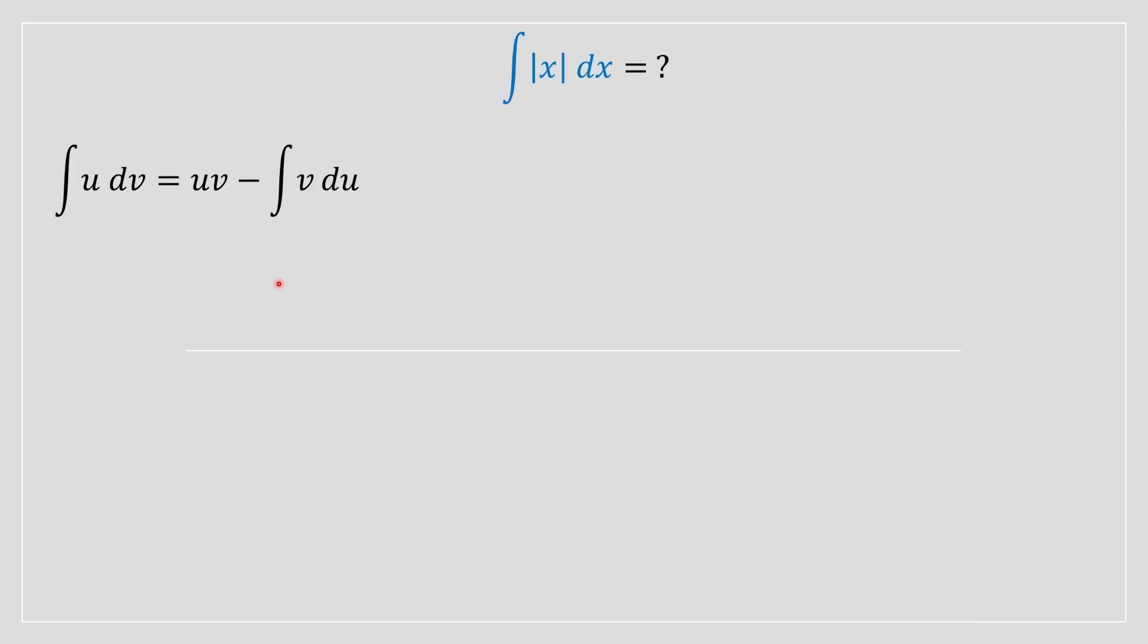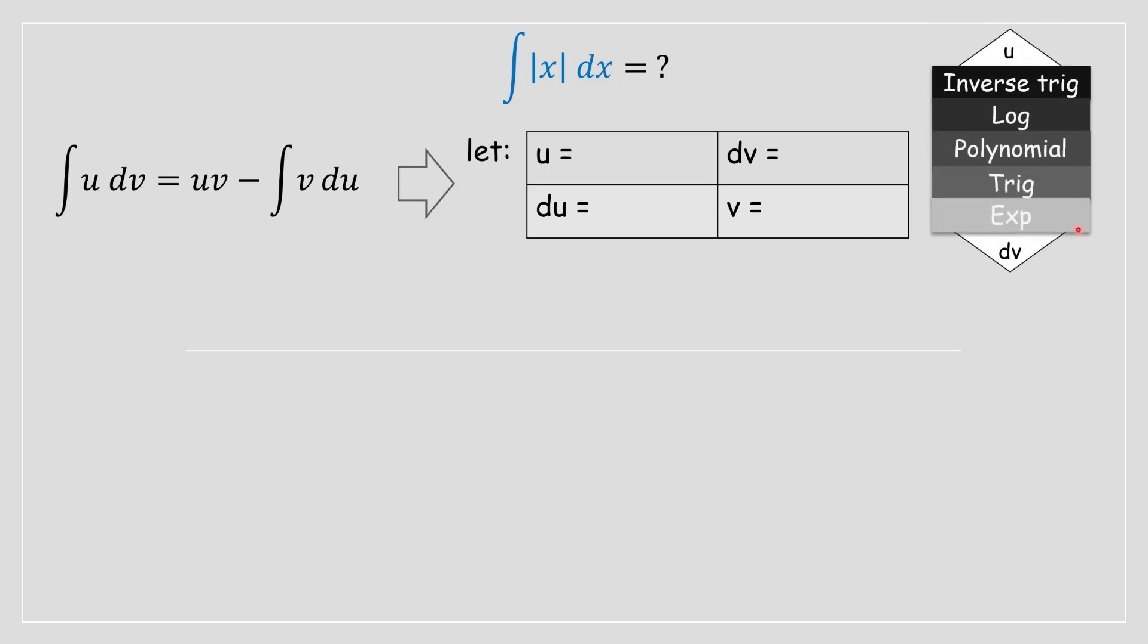The way we do this is we make a sort of table where for our u and dv variables, we've got to find the du and v equivalents. In order to help select the u and dv variables, I like to use this little chart that I made. Basically with this chart, I have to assign according to the different variables. If it's an inverse trig I will tend to go to u, and if it's an exponential it will tend to go to dv.